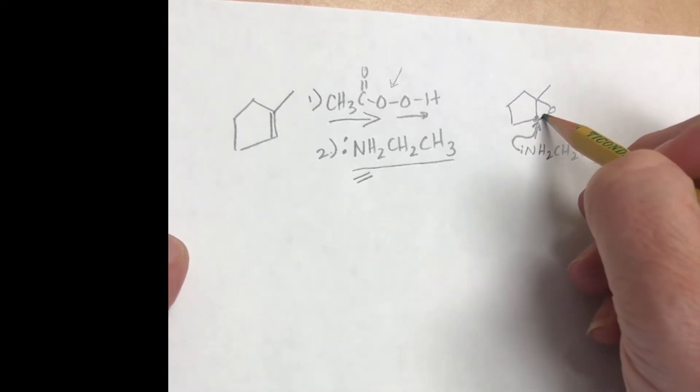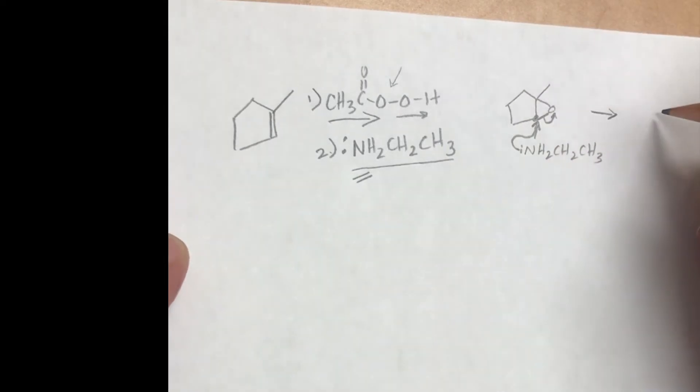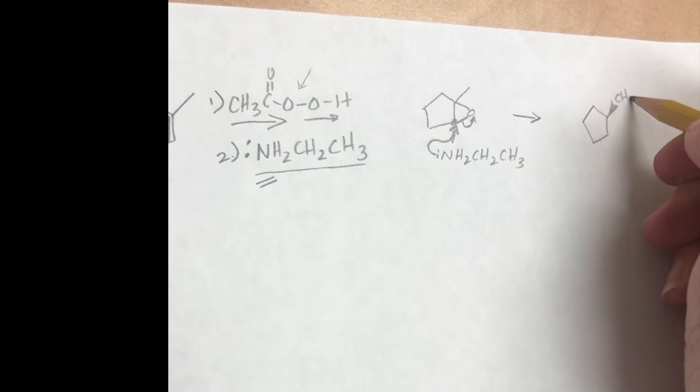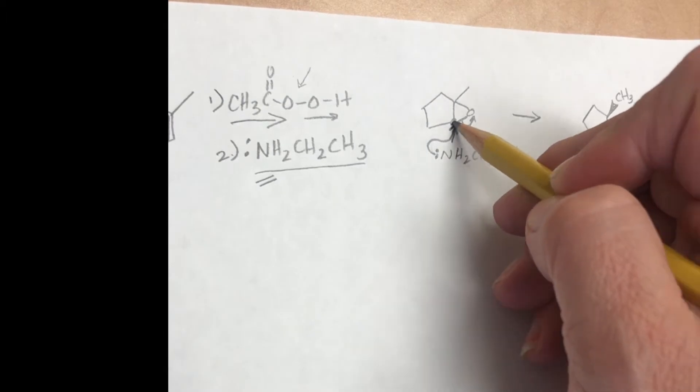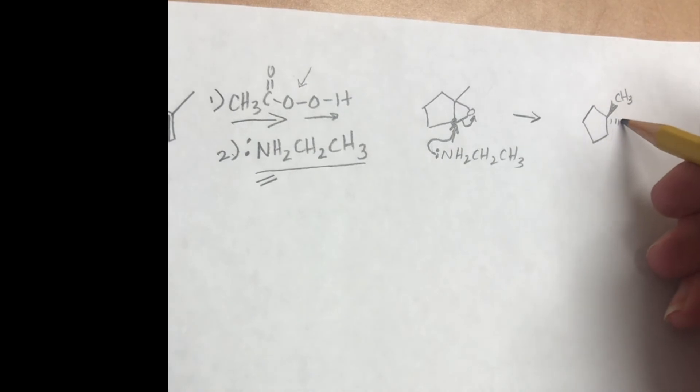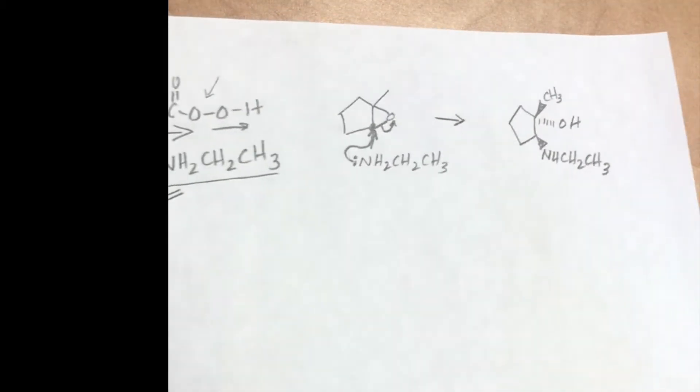Then in turn, this bond breaks and those electrons hop up onto the oxygen. And so our product of that reaction, there is our methyl group. So if the nitrogen attacks from the top, it is going to kick that oxygen down. And so we end up with the OH and the nucleophile being on the opposite side. And so that is our final product right there.